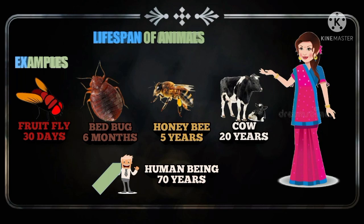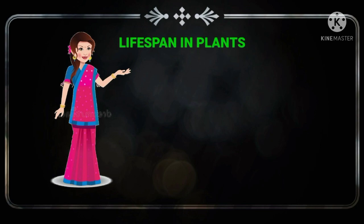In plants, the lifespan differs from each plant. On the basis of the lifespan, we can divide the plants into 3 different groups. They are annual plants, biennial plants, and perennial plants.